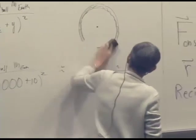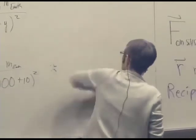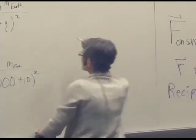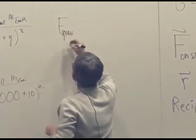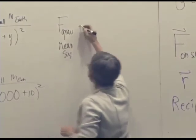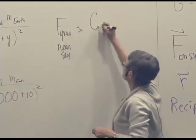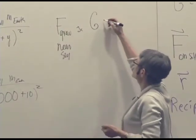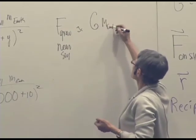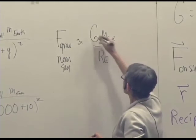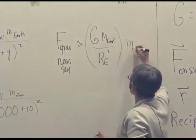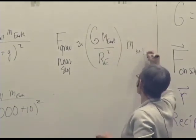And that's interesting because then the gravitational force near the surface is going to be approximately G times the mass of the Earth divided by the radius of the Earth squared times the mass of our object, the ball in this case.